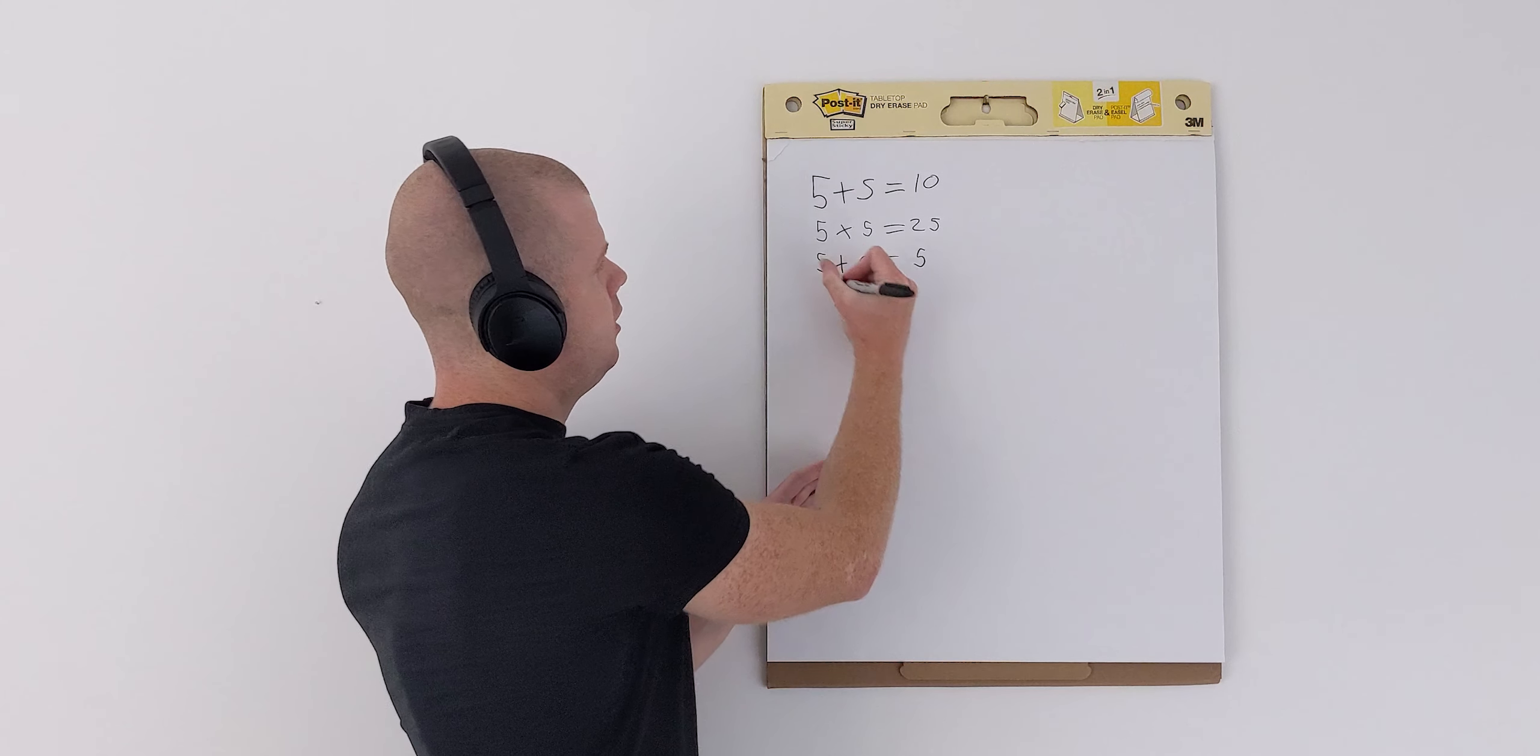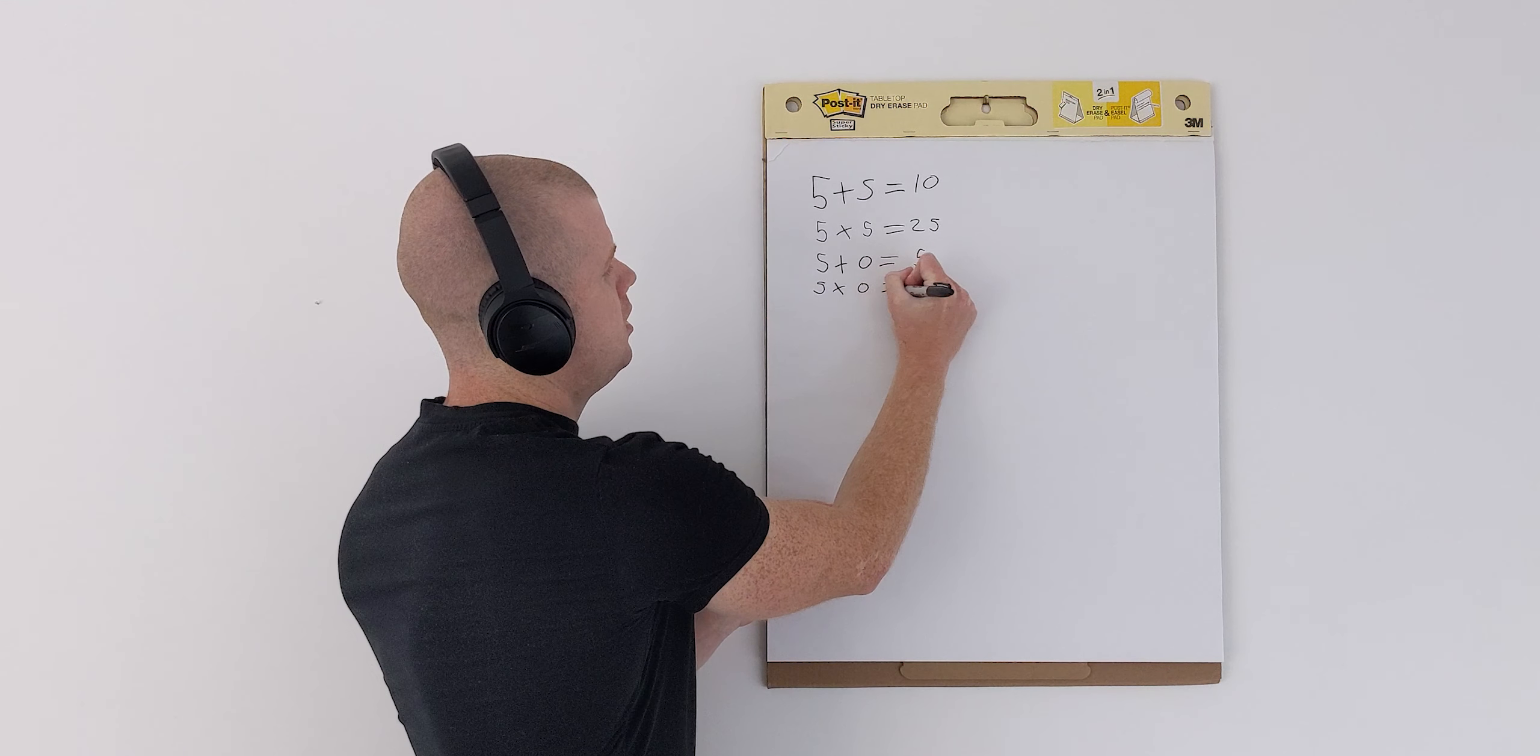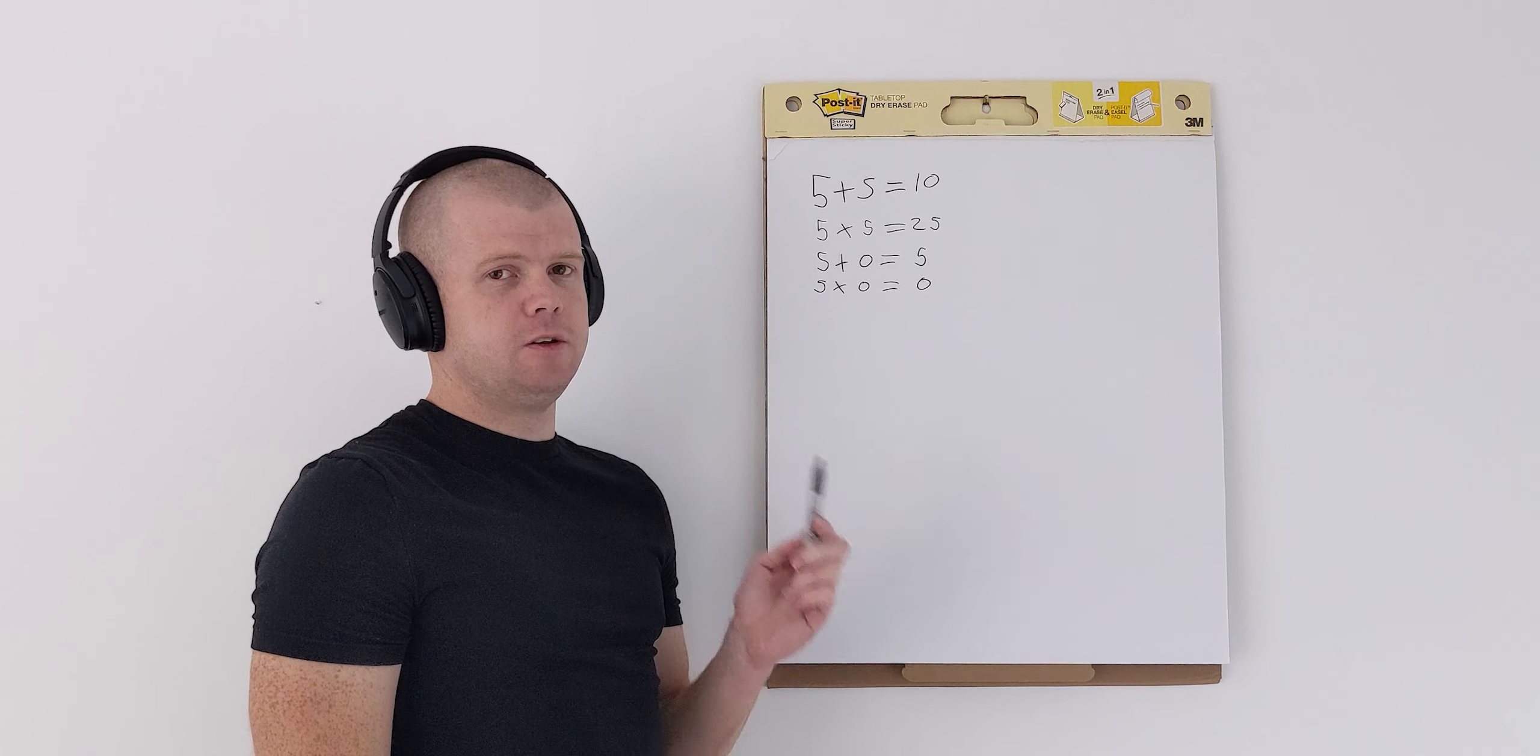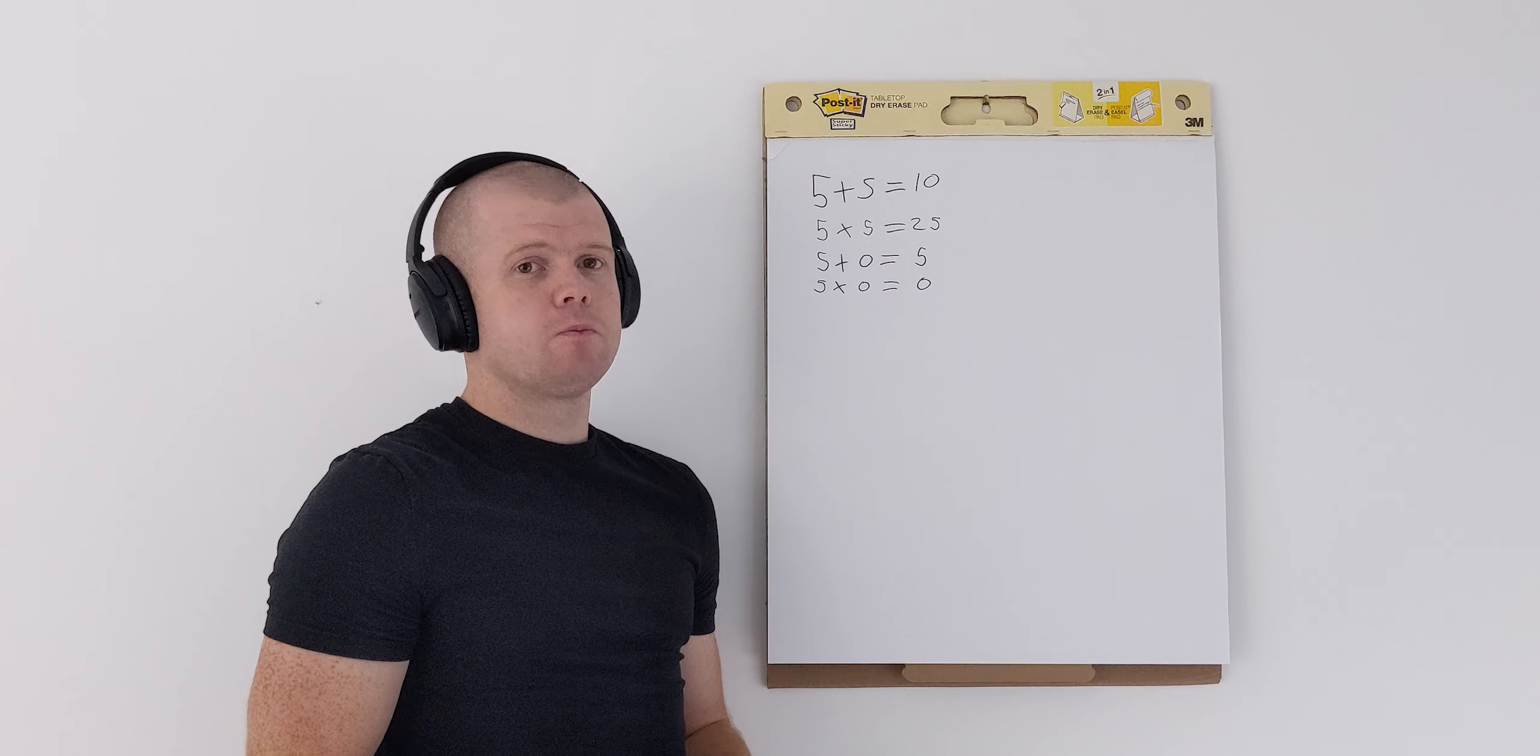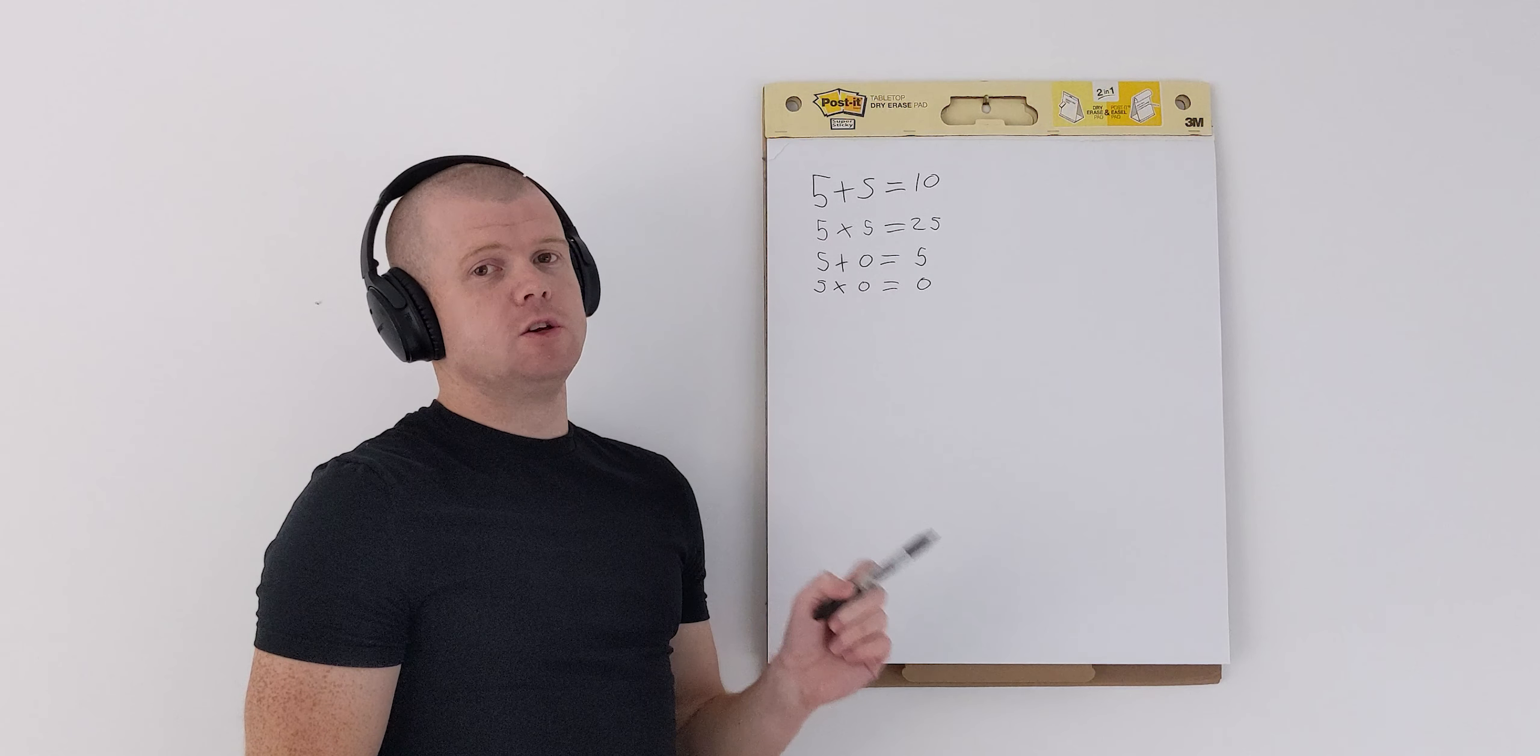However, let's take a look at our multiplicative system. 5 times 0 equals 0. So you can see that an additive system offers lower returns and lower rewards, whereas a multiplicative system offers higher returns and greater risk.